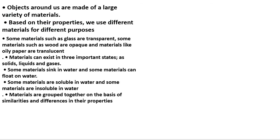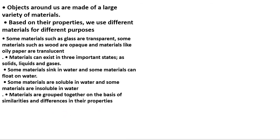To summarize: objects around us are made up of a large variety of materials. Based on their properties, we use different materials for different purposes. Some materials like glass are transparent, some like wood are opaque, and materials like oily paper are translucent. Materials can exist in three states: solid, liquid, and gas. Some materials sink in water and some float. Some materials are soluble in water and some are insoluble. Materials are grouped together on the basis of similarities and differences in their properties.